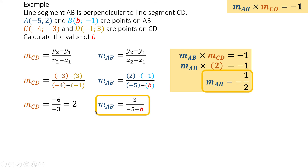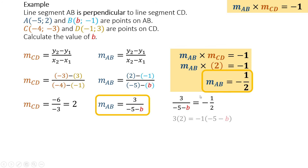I know that the gradient of AB is equal to negative 1 half, and I also know that the gradient of AB is equal to 3 over negative 5 minus B. So I can equate those because both of them are the gradient of AB — this whole thing should be equal to negative 1 half. The easiest thing to do is, because I'm dividing through by negative 5 minus B, I'm going to multiply by negative 5 minus B, and because I'm dividing through by 2, I'm going to multiply by 2 on the left hand side. So you basically just cross multiply.